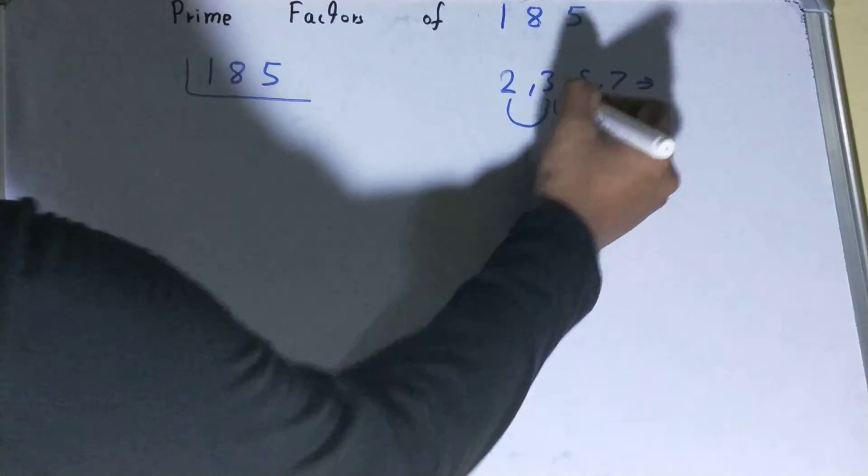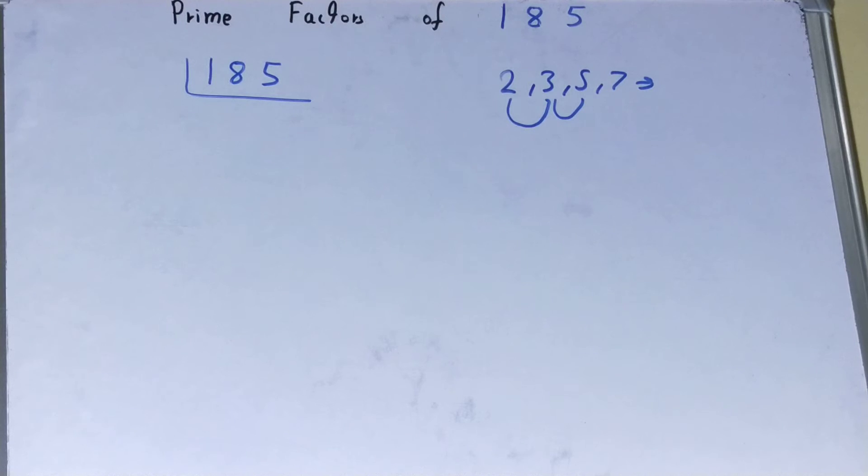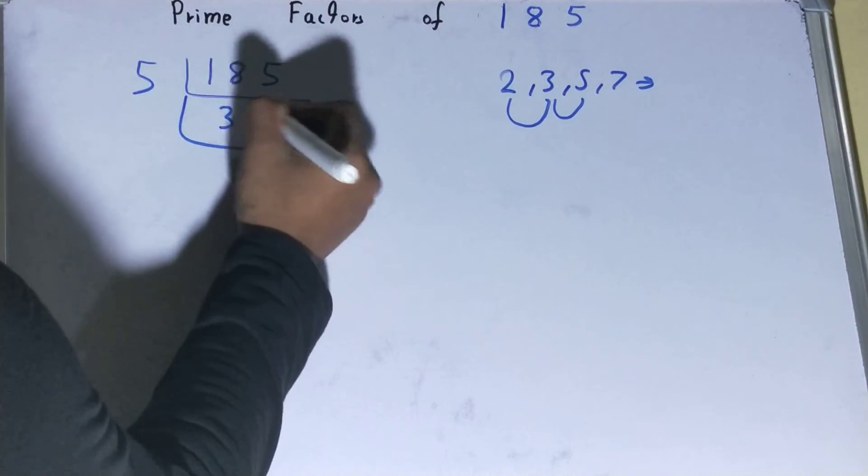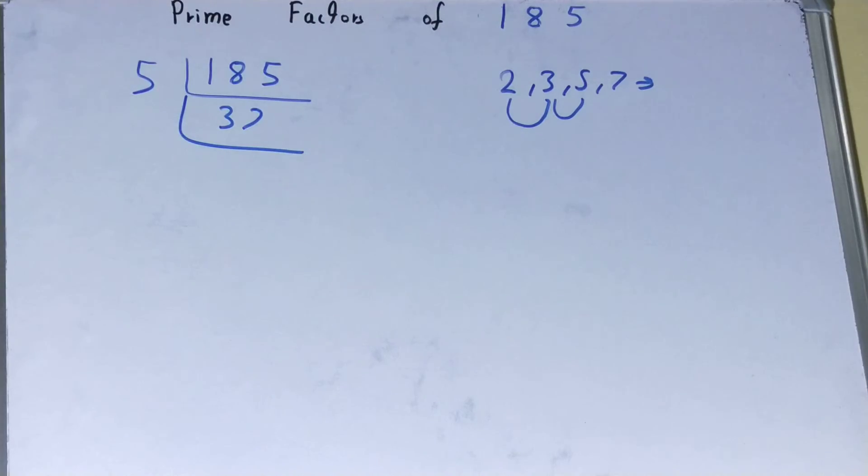So we'll go to the next lowest prime number, that is 5. Is 185 divisible by 5? Yes, because the last digit is 5. So divide it and you'll be left with 37. Now 37 is further